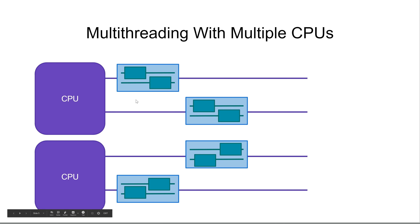In this diagram it looks as if each application is only executed by a single CPU, but that is not necessarily the case. It is possible to have an application where one thread is executed by one CPU and another thread is executed by a different CPU. In that case, those threads might actually be executing at the exact same time. This is often the case in software that requires a lot of compute power, for instance 3D rendering software, video editing software when exporting, or computer games.